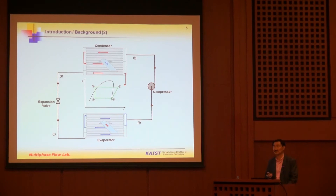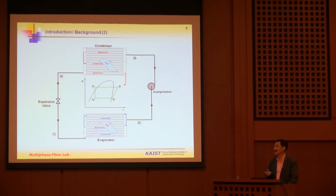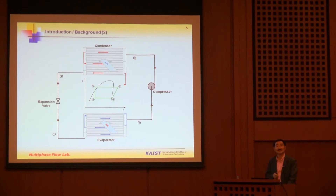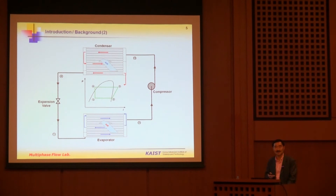After the compressor, you have high-pressure superheated vapor going into the condenser, which again has an inlet header, parallel channels, and intermediate headers. Outside the condenser, you have sub-cooled liquid going through the expansion valve through an isentropic process, and you return to point one. The important question is: can you actually make the flow distribution in the evaporator and condenser very uniform? That is our purpose — or at least can you control the flow distribution to each channel?